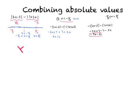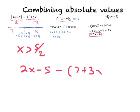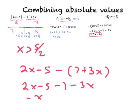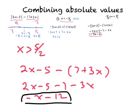Final piece: we're working on the interval x bigger than 5 halves. On x bigger than 5 halves, both functions will be positive. So our equation looks like (2x minus 5) minus (7 plus 3x). Combining: 2x minus 5 minus 7 minus 3x gives us minus x minus 12 — which is the exact opposite of the function we got for the first piece, x plus 12.